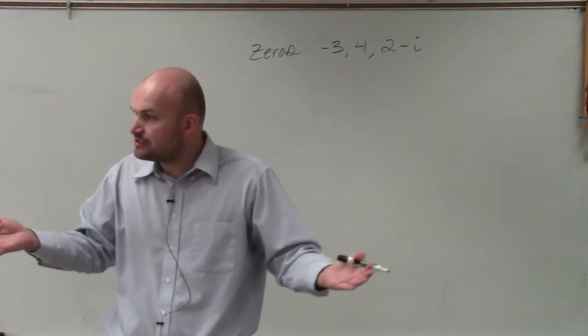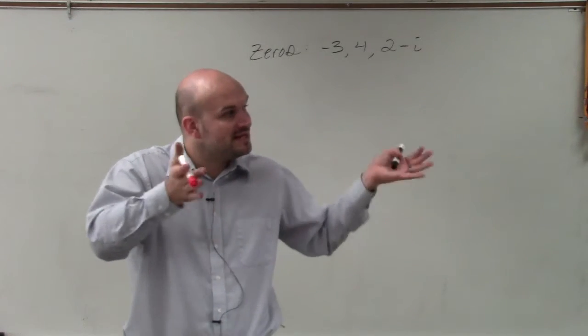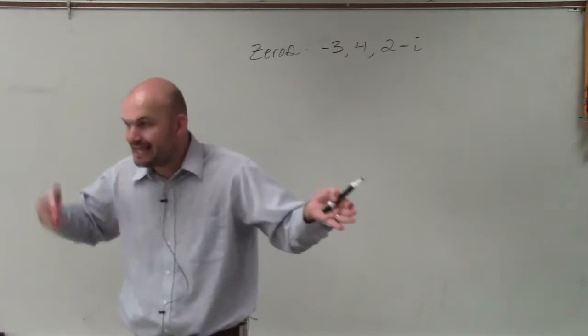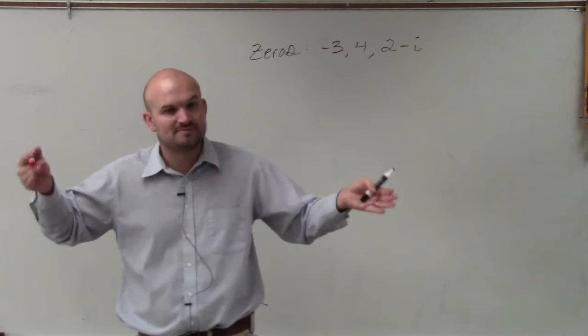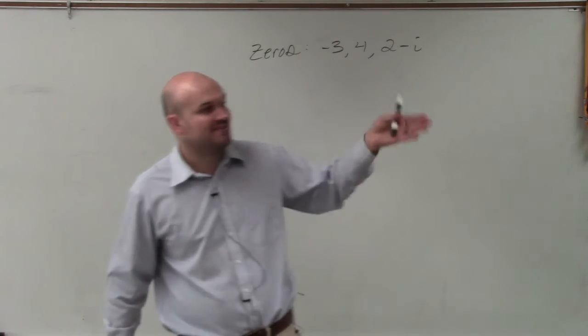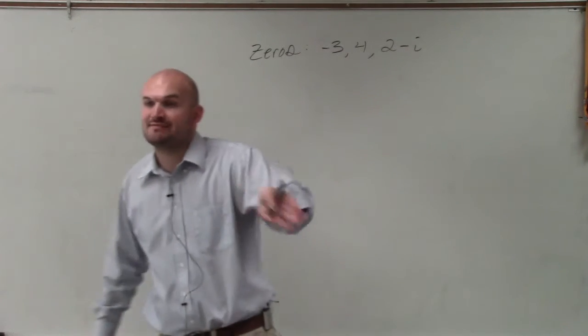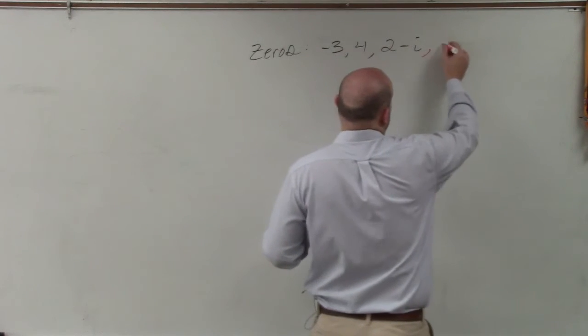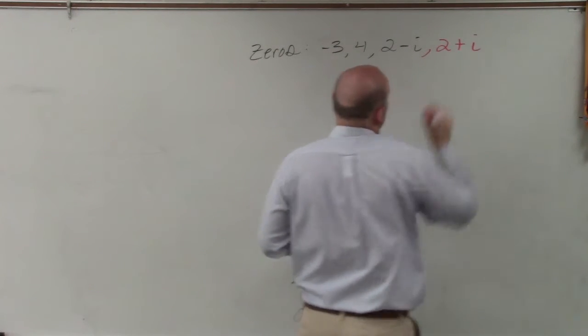The same thing applies with irrational numbers. If square root of 3 is a zero, negative square root of 3 has to always be a zero. If it's 5 minus square root of 2, you also have to have 5 plus square root of 2. So my other zero is 2 plus i.